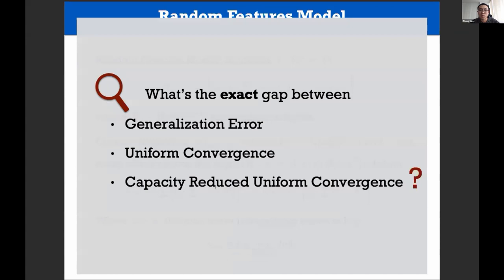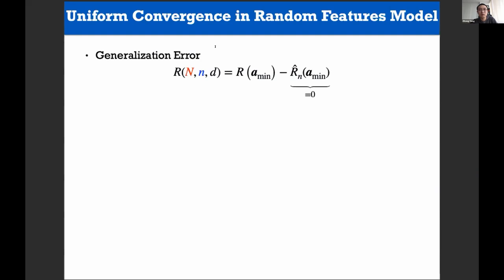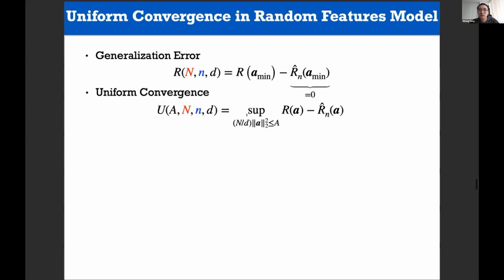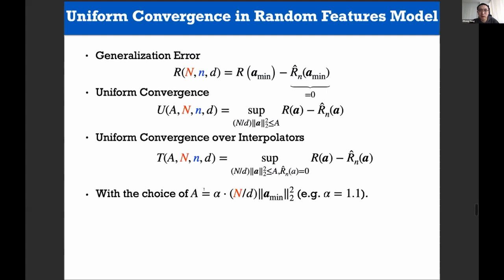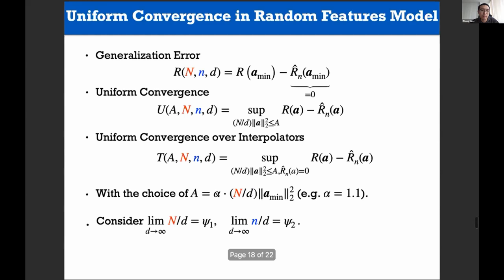When the number of features N is larger than the number of training samples, the minimum norm interpolator exists with high probability. For comparison, we look at three quantities: generalization error (test minus training loss, where training loss is zero); uniform convergence (supremum over the entire norm-ball function class); and uniform convergence over interpolators (supremum over the same norm-ball but restricted to functions that interpolate the training set). We choose A to be slightly larger than the minimum norm required to interpolate the training set so that the feasible region is non-empty.